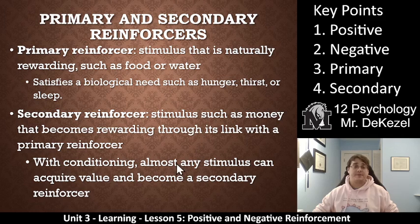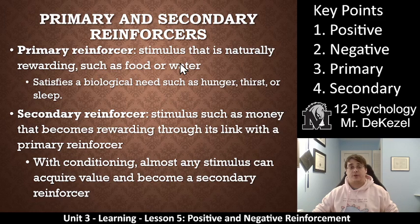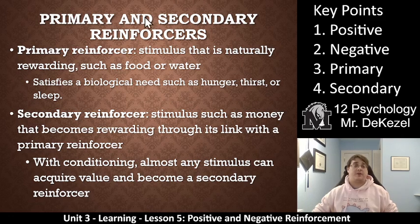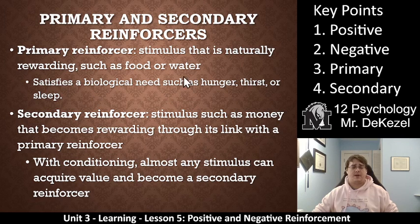A couple types of reinforcers: primary and secondary — key points 3 and 4. A primary reinforcer is a stimulus that is naturally rewarding, such as food or water, maybe shelter. This satisfies a biological need like thirst or sleep. These would be primary reinforcers — really what you need to use for animals. Hunger, thirst, and mostly food are used for training animals.